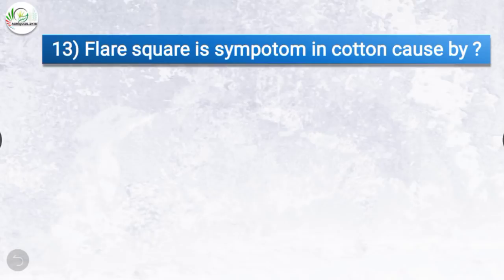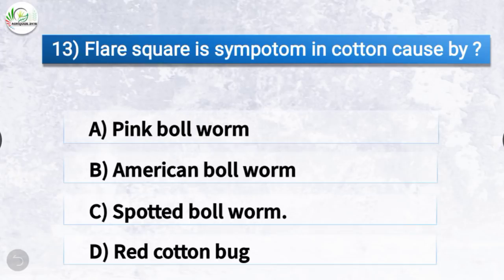Question number 13: Flare square is a symptom in cotton caused by? The correct answer is option C, spotted bollworm. Flare square is a symptom in cotton caused by spotted bollworm.